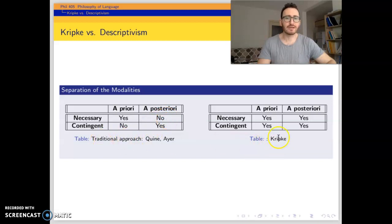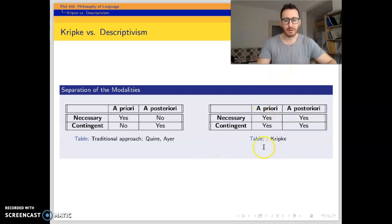But for Kripke, since there is no interdependence between these two categories, since these two categories are independent, there may be contingent a priori and necessary a posteriori propositions as well. He provides examples for contingent a priori and necessary a posteriori category propositions. Let's go on with the contingent a priori propositions.